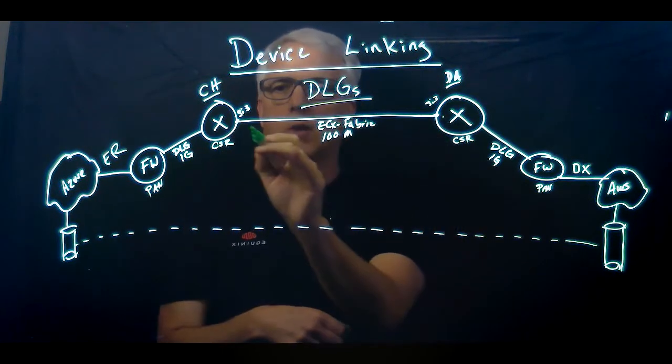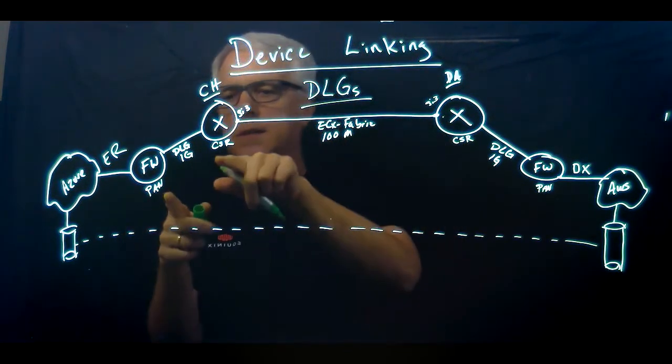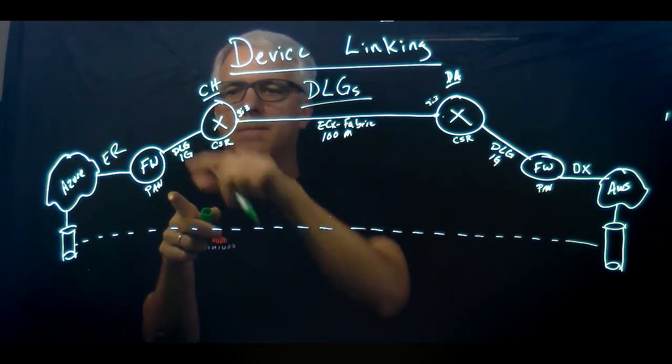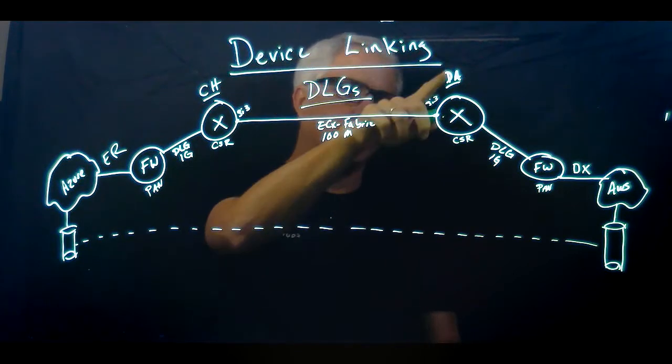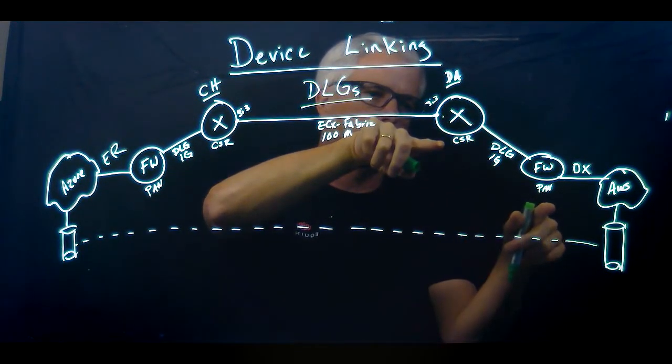So again, here's one device link group connecting inter-metro between Chicago and Dallas, and this is a device link group to connect these two network edge devices within the same metro, same way in Dallas. This CSR is going to connect to this PAN device.